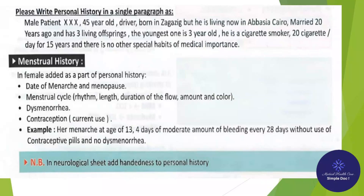Menstrual history is added as part of personal history in females. Include: date of menarche and menopause, menstrual cycle rhythm, length, duration of flow, amount and color, dysmenorrhea, and current contraception use. Example: 'Menarche at age 13; 4 days of moderate bleeding every 28 days, no contraceptive pills, no dysmenorrhea.'